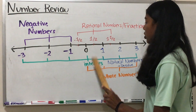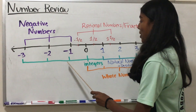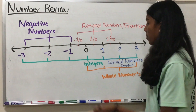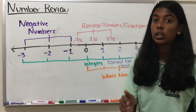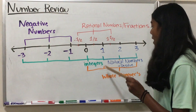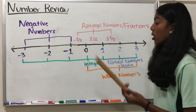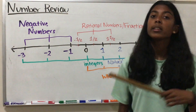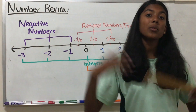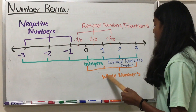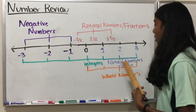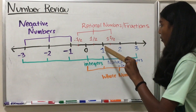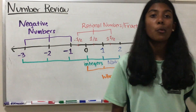Now let's move on to our integers. Our integers are all of these: negative 3, negative 2, negative 1, 0, 1, 2, 3. The integers do not include the rational numbers. And then we have our natural numbers, or our counting numbers: 1, 2, 3, and so on — the ones you can count on your fingers. And then we have our whole numbers, which are our natural numbers including 0, shown in orange: 0, 1, 2, 3, and so on.